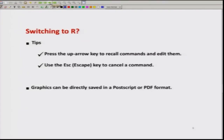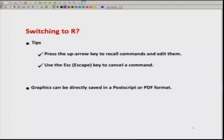Some tips for when you are working with R software: you can use the arrow keys on your keyboard to move to earlier commands, which helps in editing them. If you want to cancel a command, you can simply use the Escape key (ESC) and the execution of the command will be cancelled. For graphics, different types of plots and graphs can be constructed using R software and they can be saved as a PostScript file, PDF file, JPEG format, PNG format, or simply copied and pasted into another file.